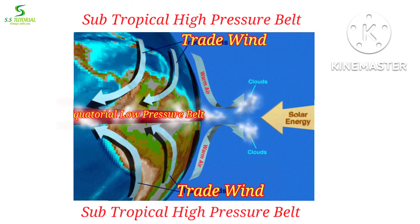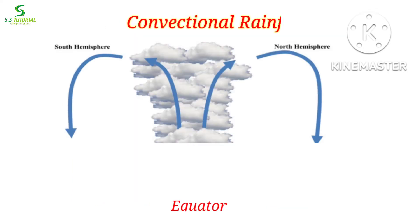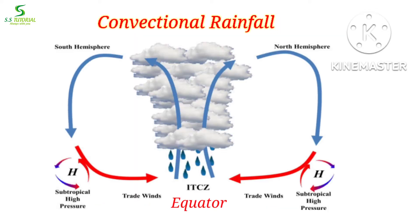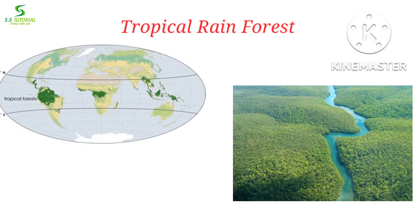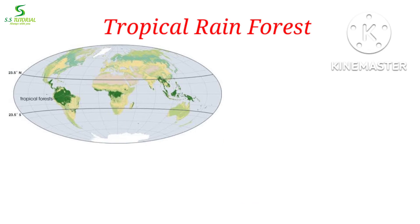The wind which comes from the subtropical region to the equatorial low pressure belt is known as the trade wind. After convergence of trade winds in the equatorial region, air gets warm and rises, and due to this heavy convectional rainfall occurs. For that reason, equatorial or tropical rainforests are located here.